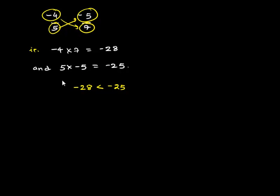Therefore, we can say negative 4 upon 5 is less than negative 5 upon 7. Hence, we get a less than symbol in the blank.